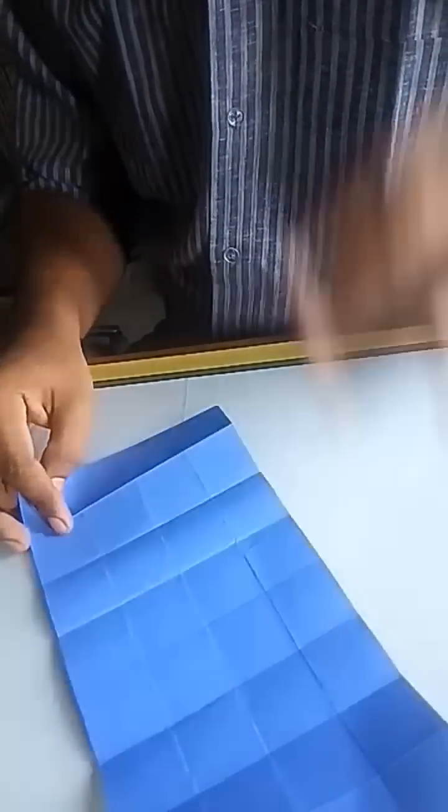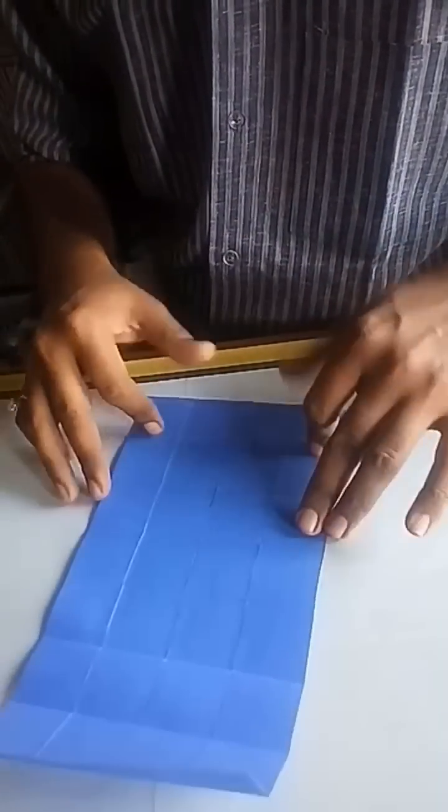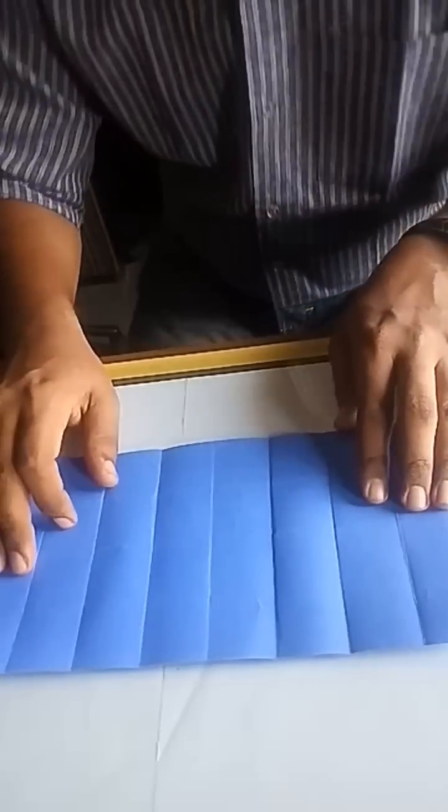As shown, now your sheet is divided into 32 identical squares.